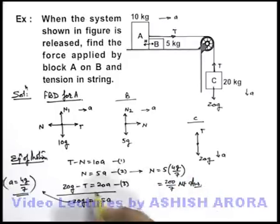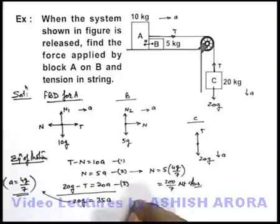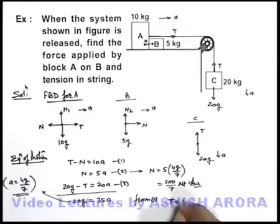As well as we are required to find the tension. This tension you can find from equation 1. From equation 1 we can simply write T is equal to 10A plus N. If we just put the value of A over here, it is 4g by 7. So it'll be 400 by 7. Plus N is 200 by 7.